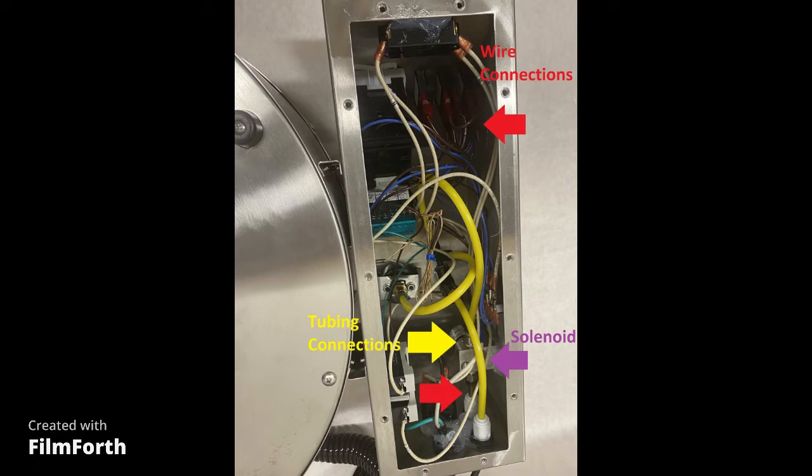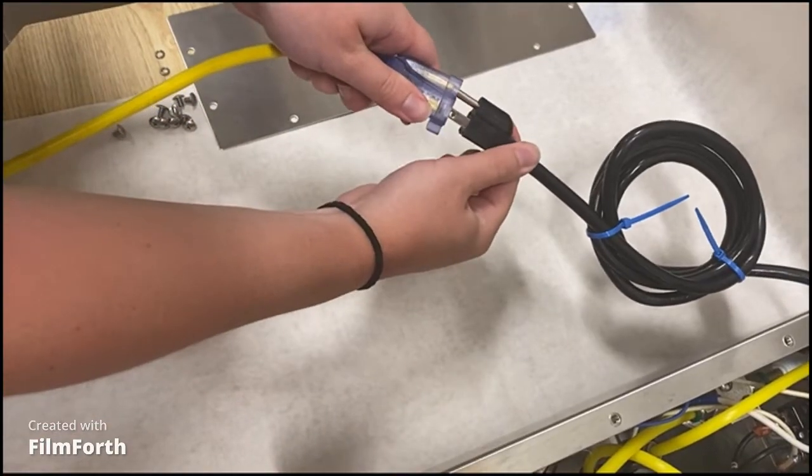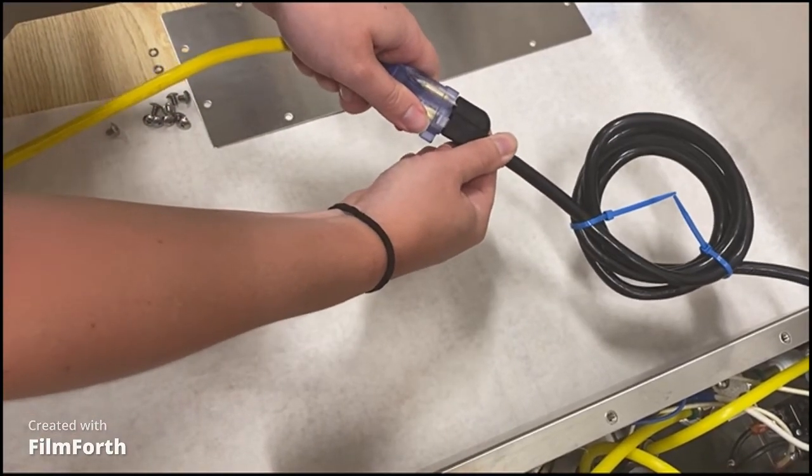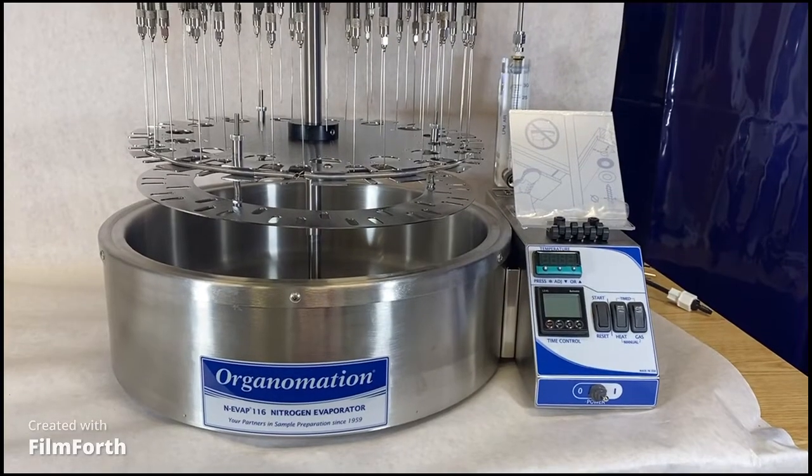To check this, keep the control box open and upside down. Make sure the gas switch is turned to manual and the power switch is turned on. Be very careful not to shock yourself. Plug in your instrument and listen for a click coming from the solenoid. If you do not hear a click as the solenoid is energized, then it is bad and needs to be replaced.